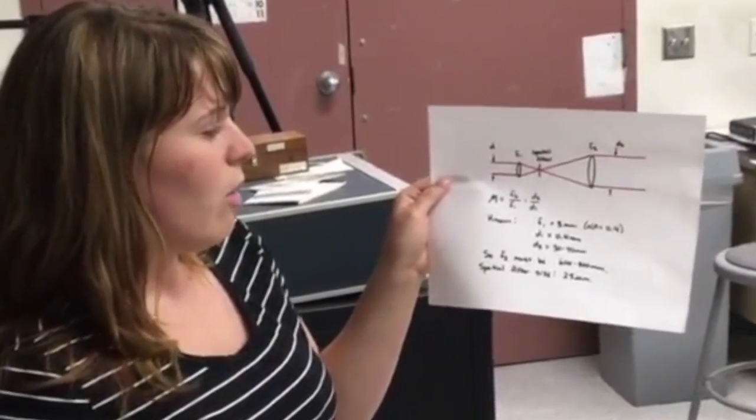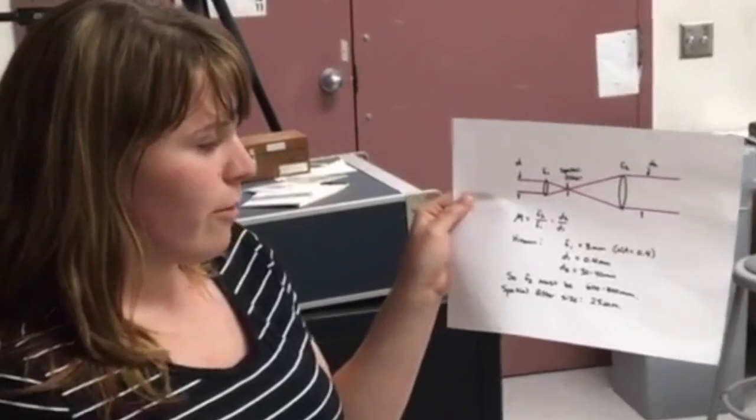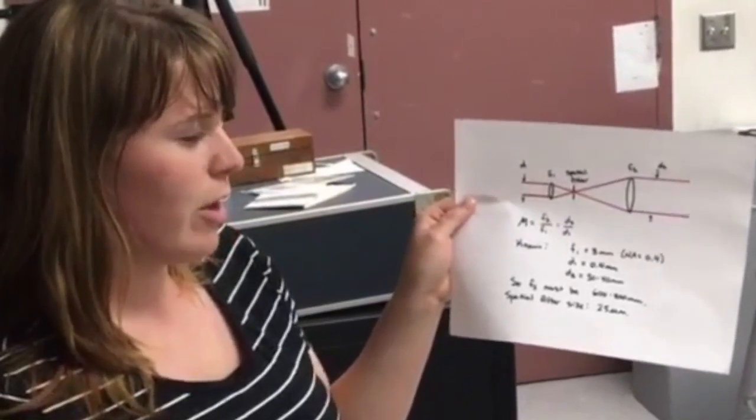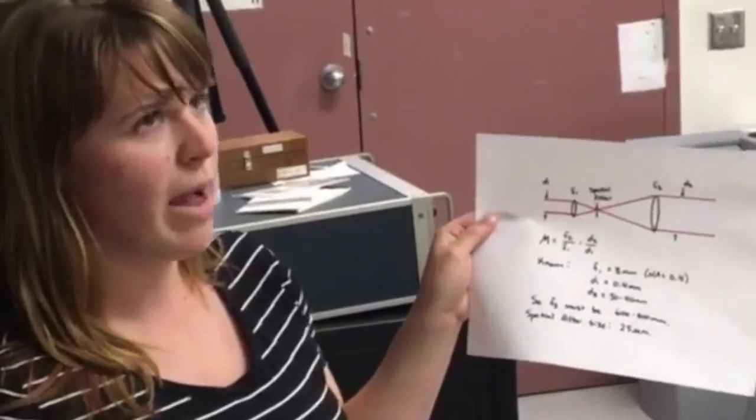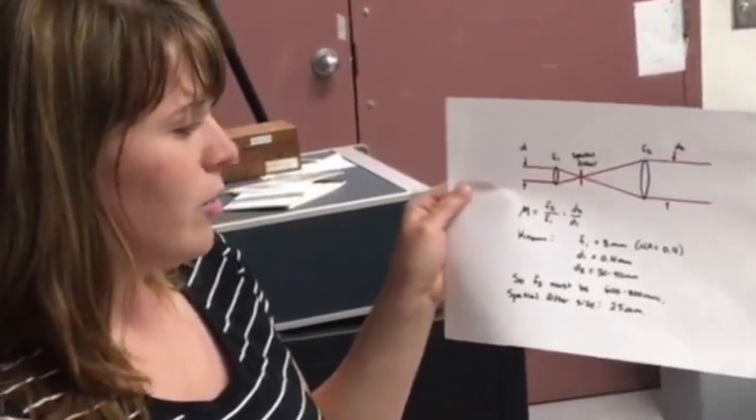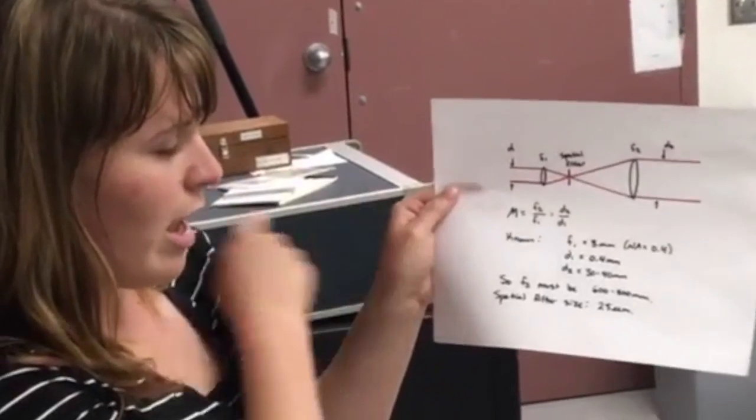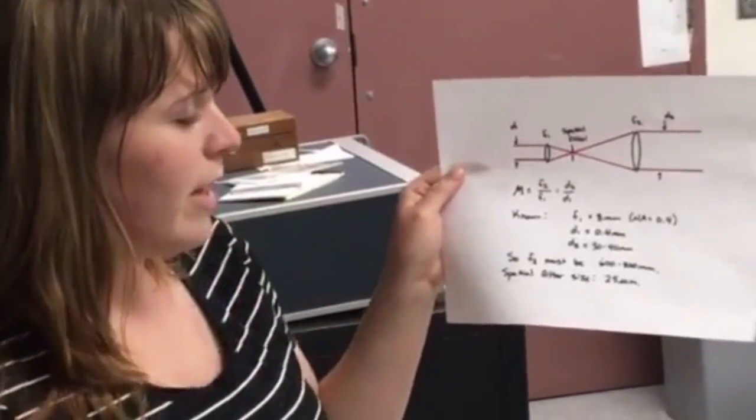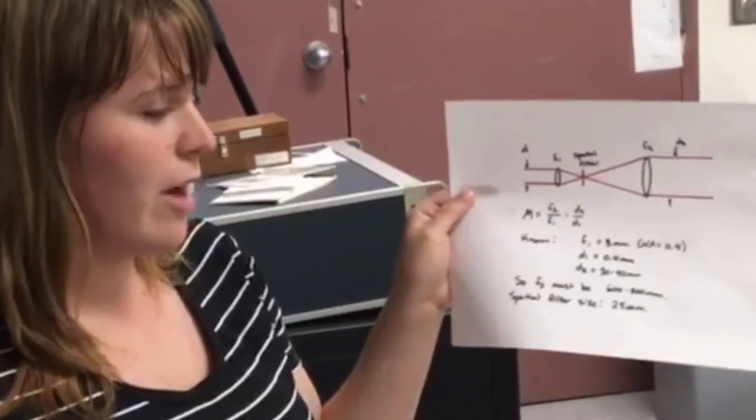Our goal is to expand the incoming beam of 0.4 mm to a size of about 30 to 40 mm, so a magnification of 75 to 100 times the original size. Using this calculation, we can find that the second focal length needs to be between 600 and 800 mm.